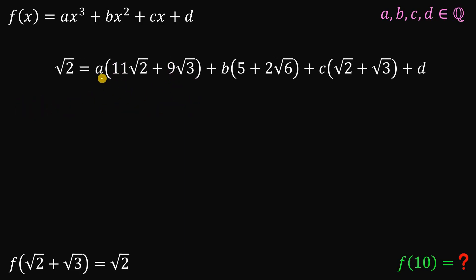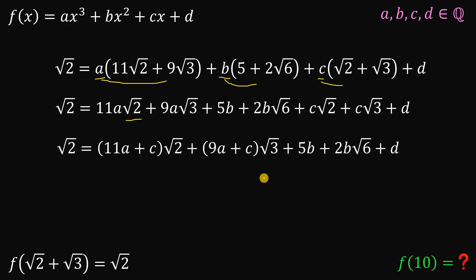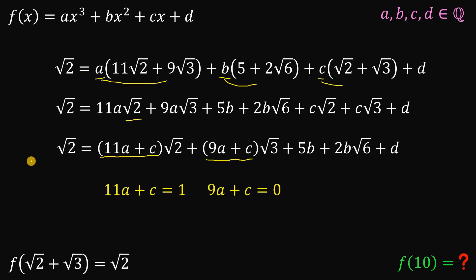At this point, what we're going to do is distribute A inside the parenthesis, distribute B inside the parenthesis, and distribute C inside the parenthesis. Then we combine like terms having square root of 2 and square root of 3, and compare the left-hand side and right-hand side. We equate 11A plus C with the coefficient of square root of 2 on the left-hand side, which equals 1. And 9A plus C equals 0, because we don't have square root of 3 on the left-hand side. Technically, B and D are both equal to 0.